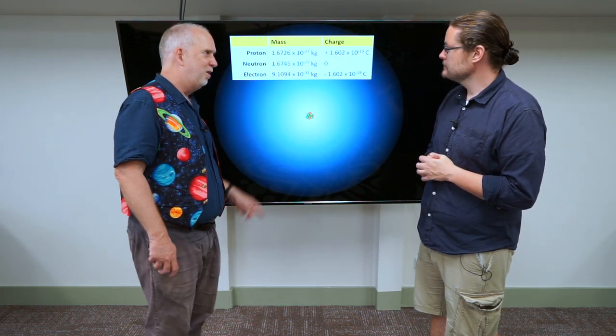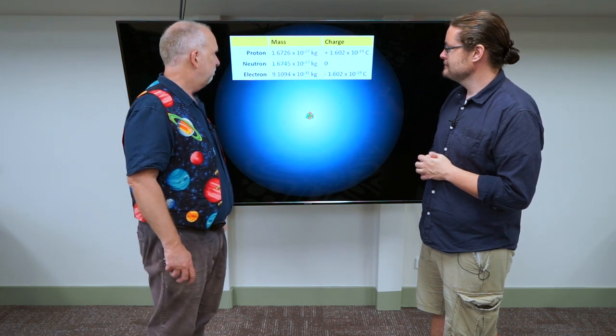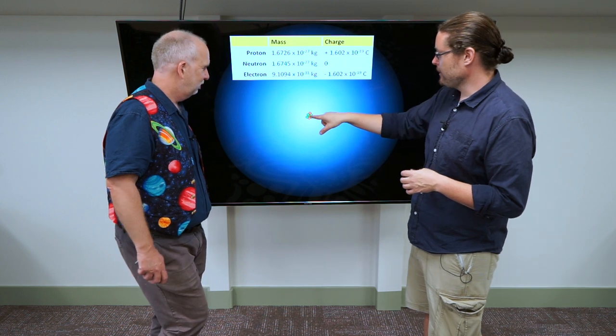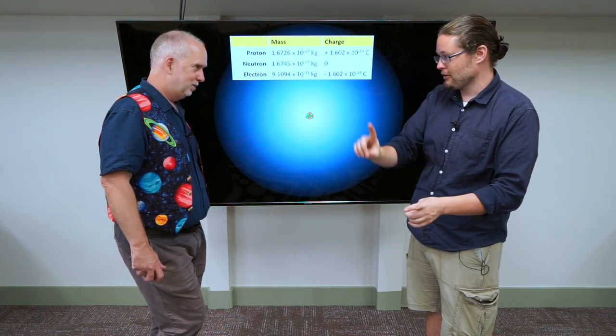And then also, somewhat to everyone's surprise, you have another particle with no charge at all, and also lots of mass, about the same mass as a proton. So you have two particles on the inside, a proton and a neutron, both very massive, but only one has charge positive.